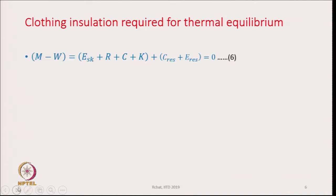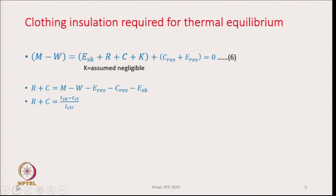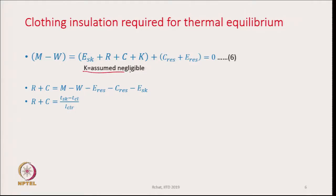Clothing insulation required for thermal equilibrium requires S = 0. Since conduction heat loss K is very very low because air is a poor conductor, we can for all practical purposes neglect K. What remains is: M – W = ESK + R + C + CRS + ERS.